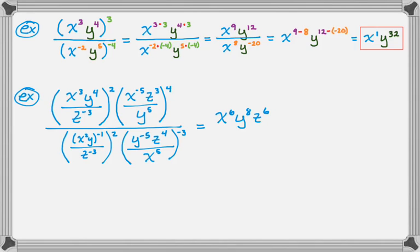This is where knowing all the rules starts to really benefit you. Now for the next quotient — the thing raised to the fourth: x to the negative fifth raised to the fourth is x to the negative 20th. z cubed to the fourth is z to the 12th, because I multiply. Then y to the fifth to the fourth is y to the 20th, but that's in the denominator, so I'm going to move it up as y to the negative 20th. And now I've taken care of everything in the numerator of the giant fraction.